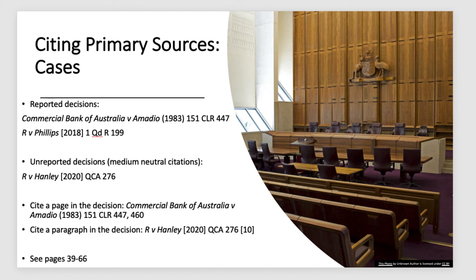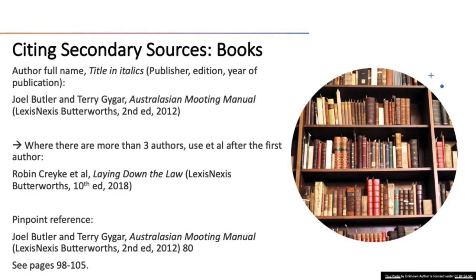There is a lot to take in, and it takes practice — you will probably need to frequently refer to the rules as you write until you get used to them. Make sure you look at pages 39 to 66 of the AGLC for further rules on cases. Moving on to secondary sources, we are focusing on books and journal articles, which are the sources students most commonly use. There are other secondary sources such as newspaper articles and web pages that you will need to look up as and when you use them.